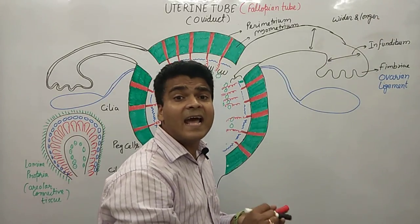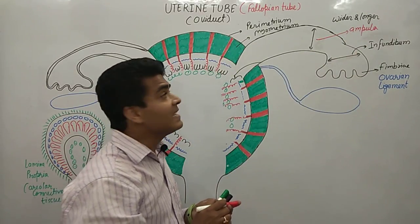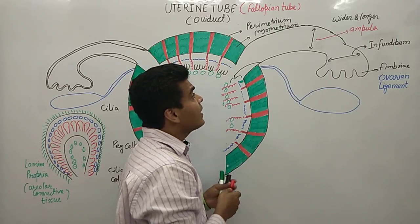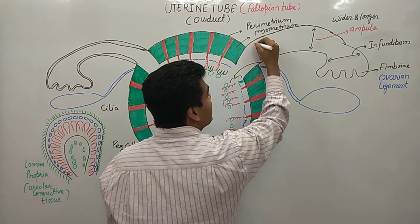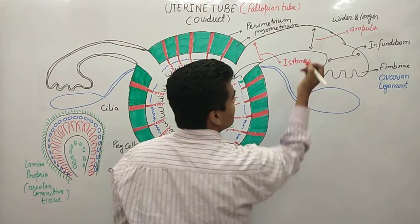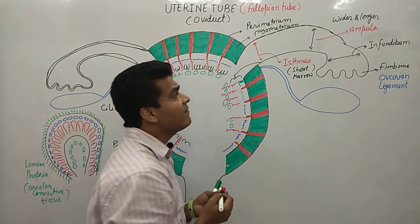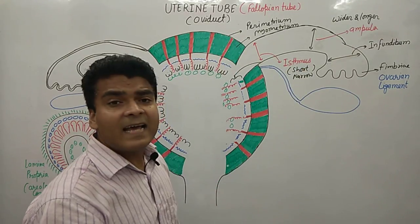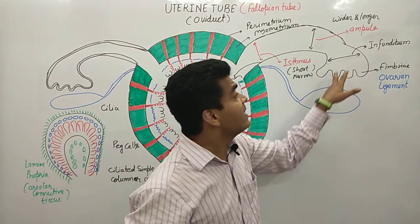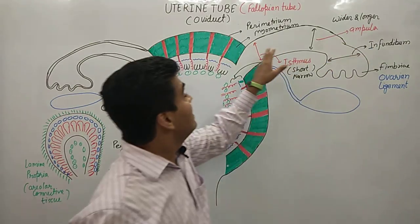This wider and longer area is particularly known as the ampulla. Inferior to the ampulla, on the lateral side, there is a narrow area known as the isthmus of the uterine tube. The isthmus is short and narrow. So to summarize: finger-like projections are fimbriae, the funnel shape area is the infundibulum, the wider and longer area is the ampulla, and the short and narrow area is the isthmus.